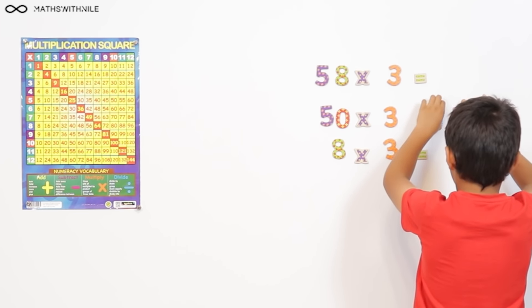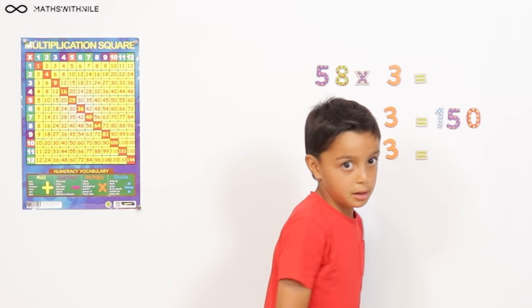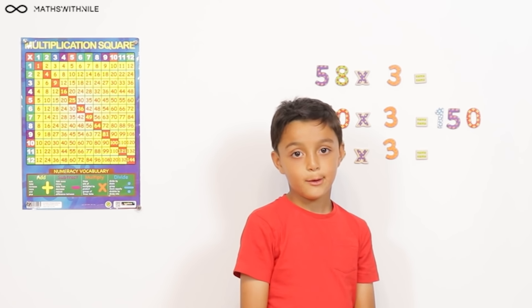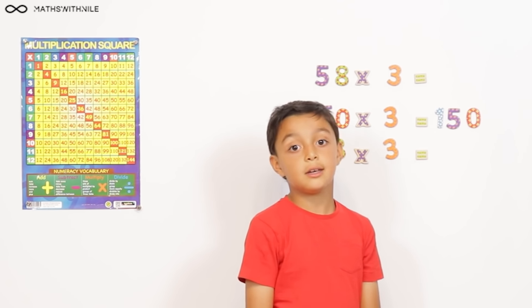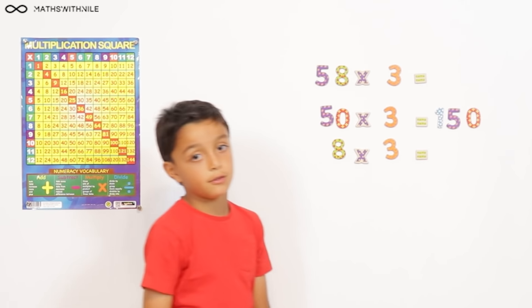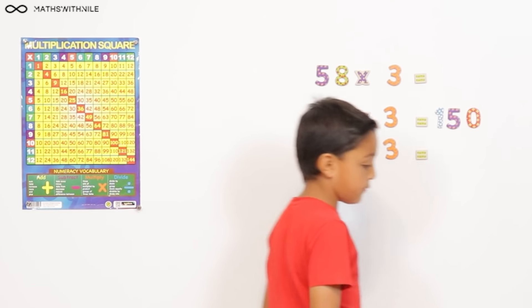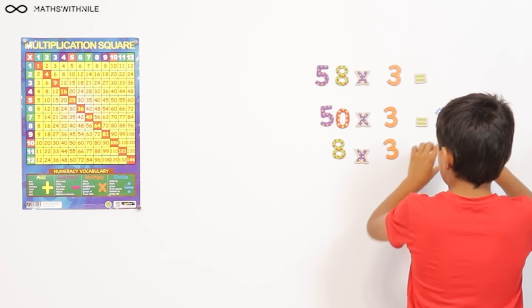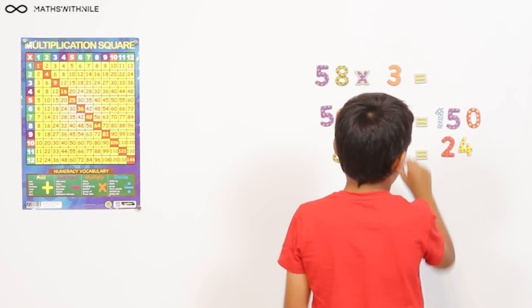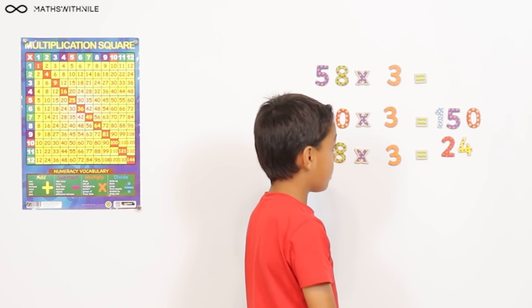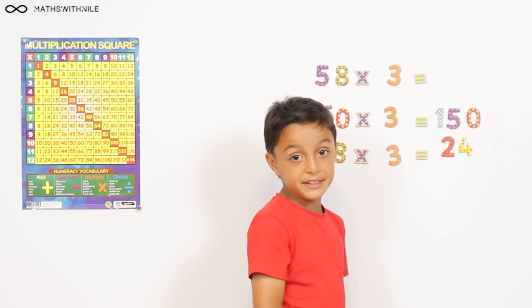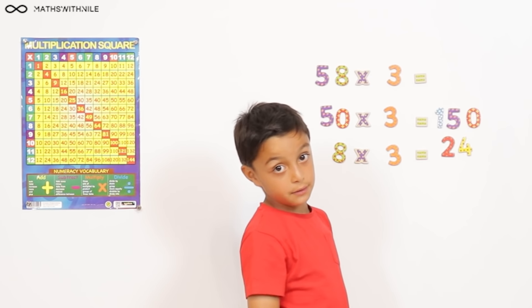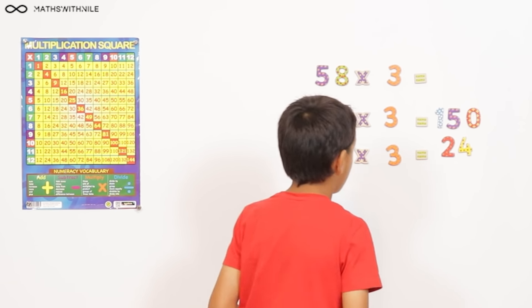And then 8 times 3, well, 2 times 8 is 16. And 16 add 8. Well, 16 add 4 is 20. And then 20 add 4 is 24. So, it equals 24. So, 150 add 24. Well, 150 add 20 is 170. And then 170 add 4 is 174. Very good, Niall.